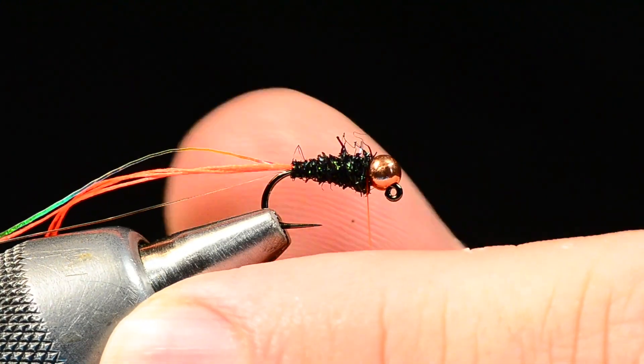I'm going to sweep that collar back a bit and build a thread collar. This thread collar should be somewhat prominent. You want it to stick out, you want it to be obvious. Then I'll come in with my whip finisher and whip finish right up on the back edge of the bead there, just kind of building that collar up just a bit.